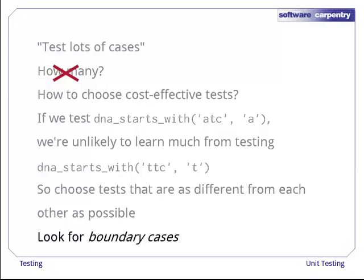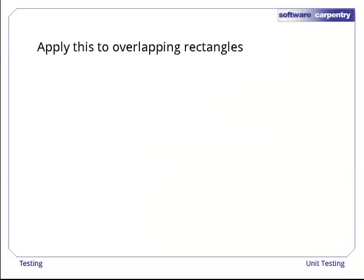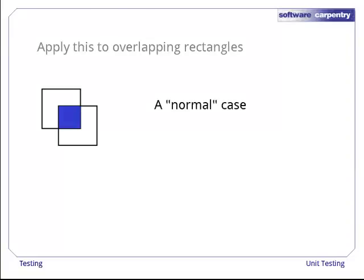Another way of thinking about this is that we should try to find boundary cases. After all, if a function works for 0, 1, and a million values, it will probably work for 18 values. Let's apply this idea to our overlapping rectangles problem. Here's a normal case, two rectangles that overlap by half in each direction. What other tests would be useful? Take a moment and see what other tests you can think of.